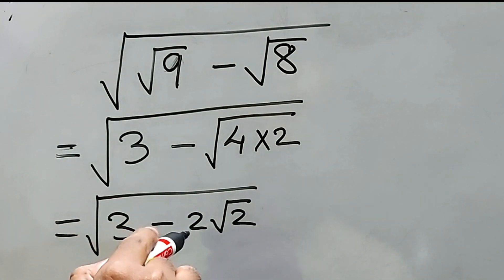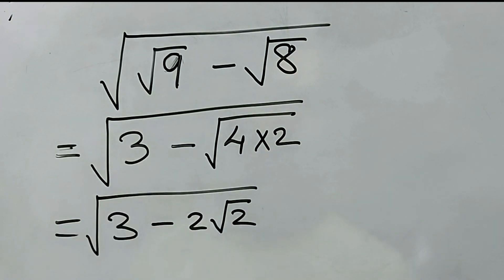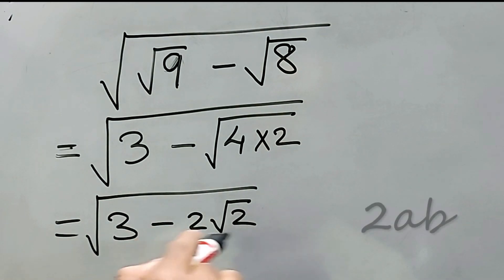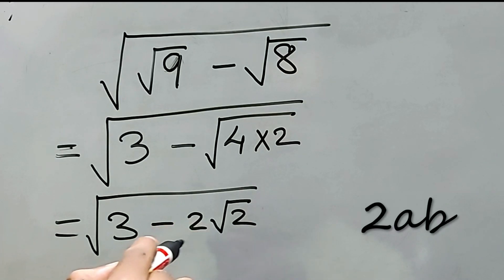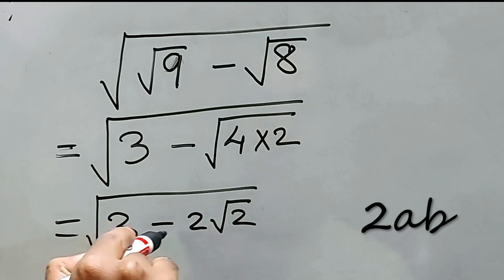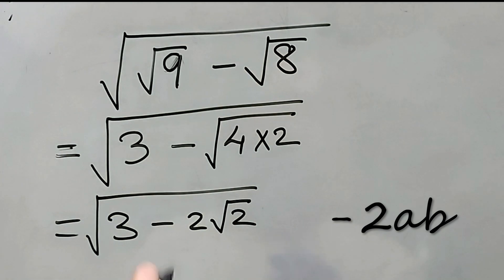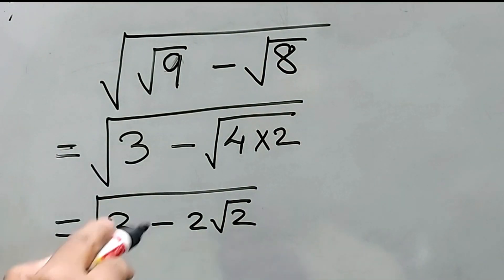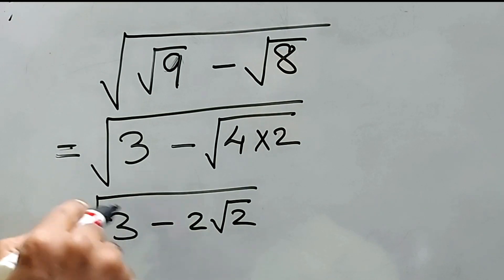See, this is 2 square root of 2. Seeing this, we have to imagine that it is 2ab and not only 2ab, it is minus 2ab. So if it is minus 2ab, there will be a square and b square within this 3. Okay, getting my point.